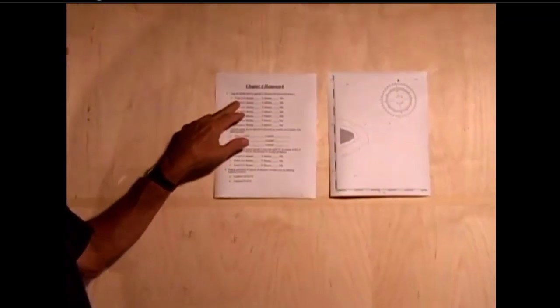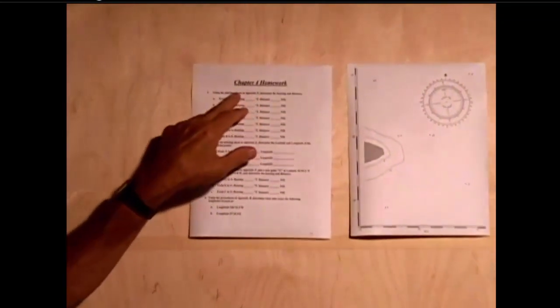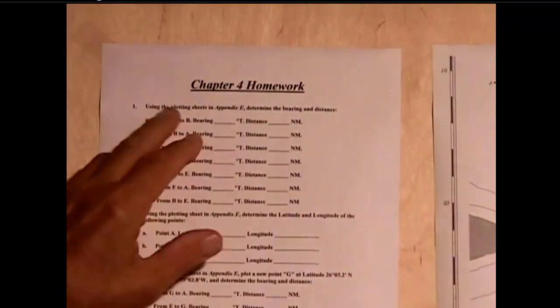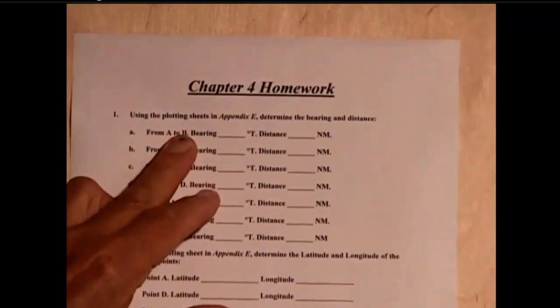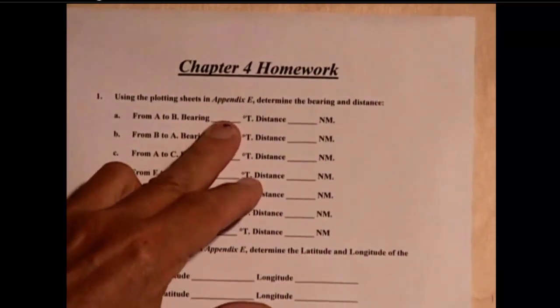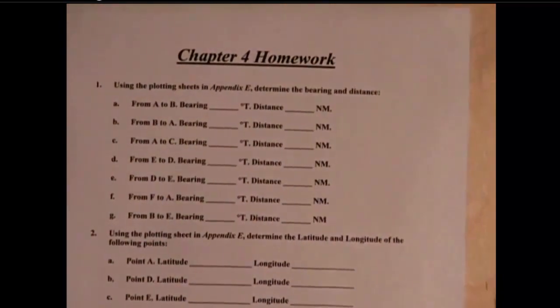Question 1A. The question is, using the appendix E plotting sheets, plot a bearing from points A to B, determine what the true direction is, and also measure the distance.